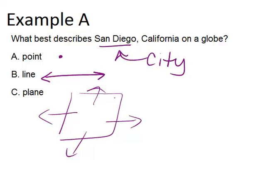So on a globe, cities are so small compared to the whole Earth that they're usually represented by dots. So the best way to describe San Diego, California on a globe would just be A, a point.